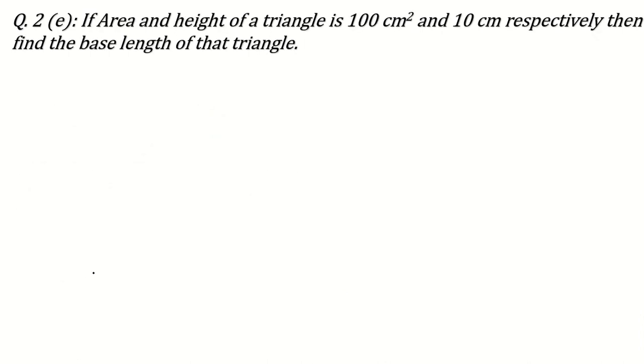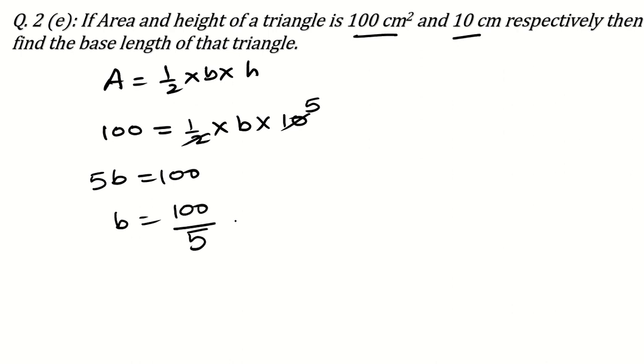Now, next question can be: if area and height of a triangle is 100 centimeter square and 10 centimeter respectively, then find the base length of the triangle. So area is half times base times height means 100 centimeter square is the area, half, base we don't know, and height is 10. So just simplify this. 10 divided by 2 is 5. So 5B is equal to 100. So B is equal to 100 divided by 5. 100 divided by 5 means 20 centimeter. Like this you can solve the questions related with the triangle. So I am sure you have understood this question also.